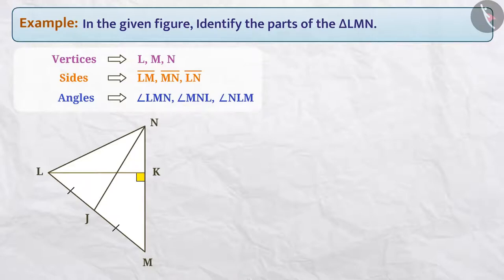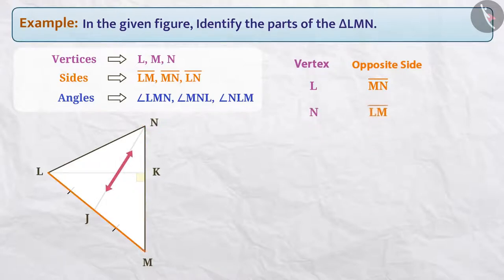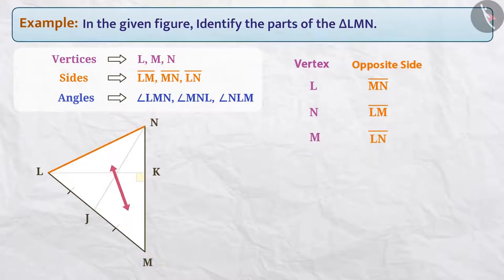The side MN is opposite to the vertex L — that is, MN is the opposite side of vertex L. Similarly, the vertex and opposite side pairs are: vertex N and side LM, and vertex M and side LN.